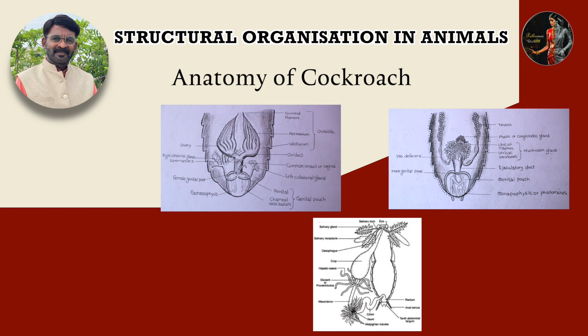The anatomy of the cockroach includes the body wall, body cavity, endoskeleton, digestive system, circulatory system, respiratory system, excretory system, nervous system, and reproductive system. We can see everything.